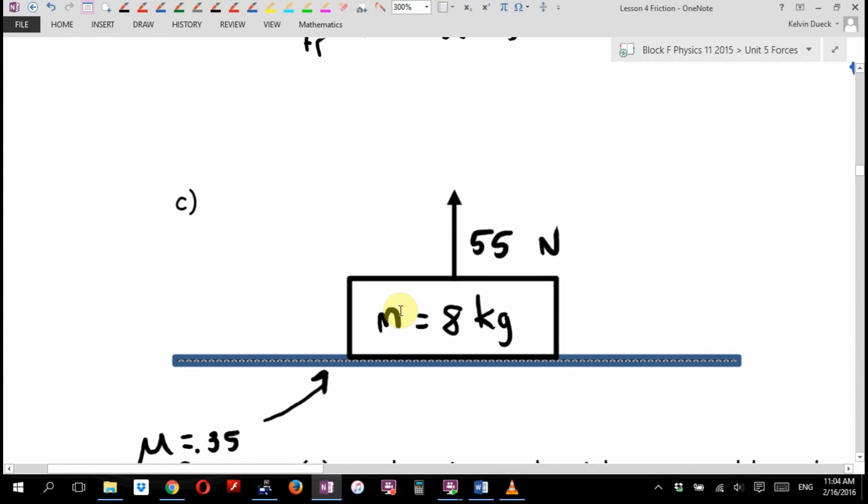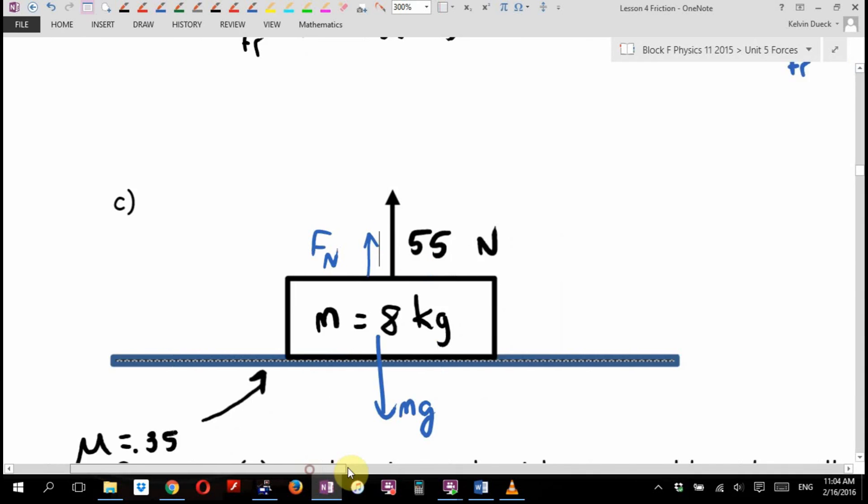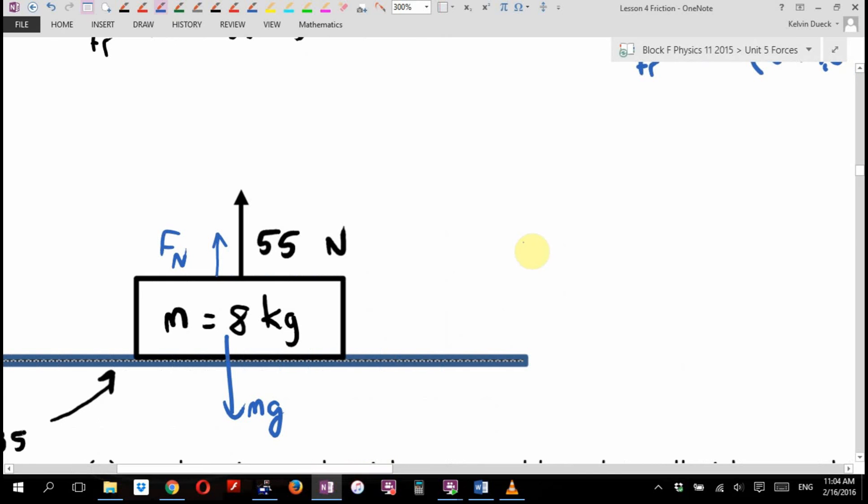Situation C. What are the forces acting on it? Mg down. What else? Well, now someone's lifting up. There is a normal force still, because it's not sinking into the ground like quicksand. But I think the normal force is smaller. So I'm going to go like this. I'll really exaggerate it so that it catches my eye and I notice it's smaller. This wants me to find the force of friction. Friction equals mu times the normal force. I don't know the normal force. Oh, but look, I know a way that I can figure out the normal force.